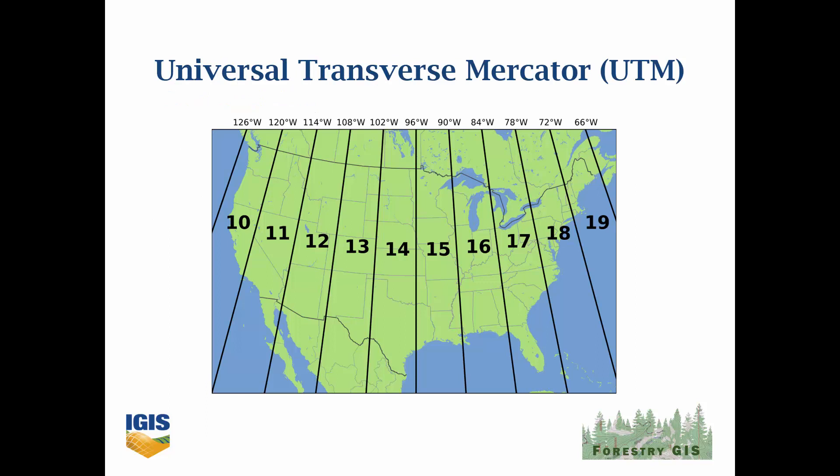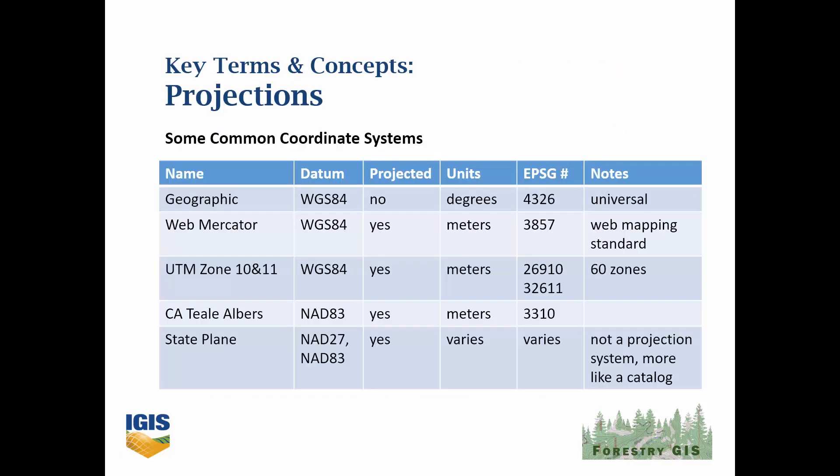Universal Transverse Mercator, or UTM, is one of the more common projection systems for small and medium sized areas. UTM divides the Earth into 60 zones, each one 6 degrees in width, which allows it to minimize distortion. California falls in zones 10 and 11. One of the nice things about UTM is that the units are meters, so it's really easy to calculate distance and area. These are some other common projection systems for California. One thing to point out is that each projection system has an EPSG ID number, and when you're in the software and want to use one of these projection systems, the easiest way to find it among the hundreds available is to search for the EPSG number.